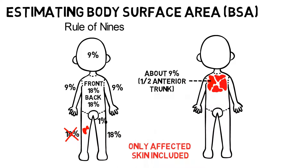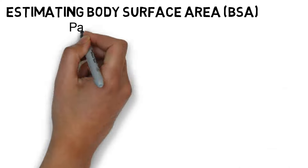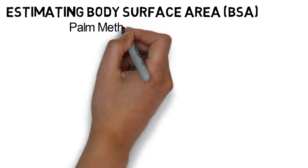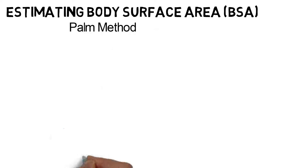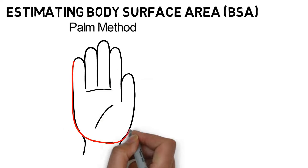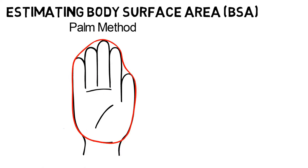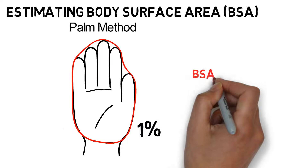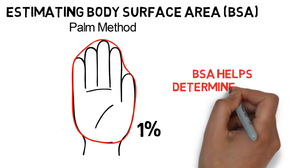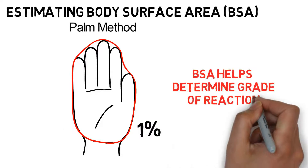For smaller scattered lesions, the palm method may be more useful. Using the palm method, the entire palmar surface of the child's hand, including fingers, is approximately 1% of TBSA. Knowing how to estimate the BSA will help us determine the grade of the reaction.